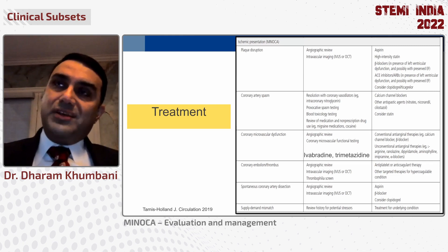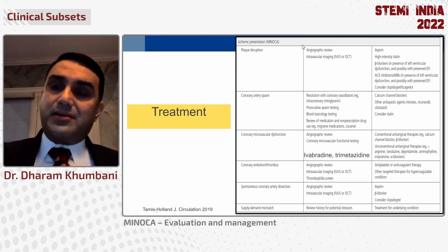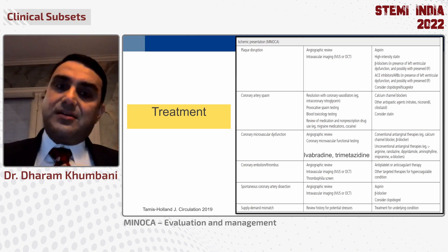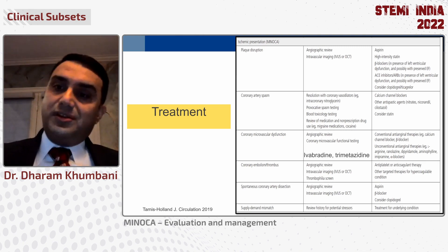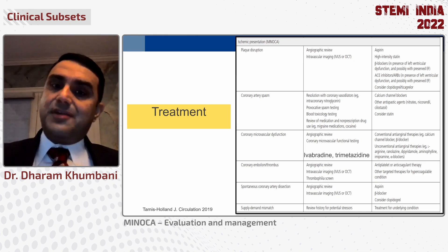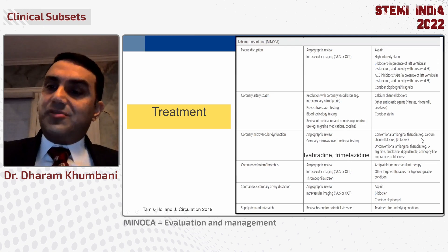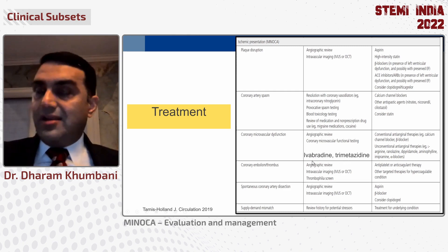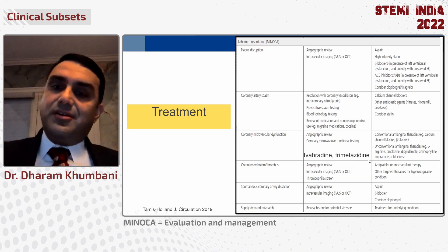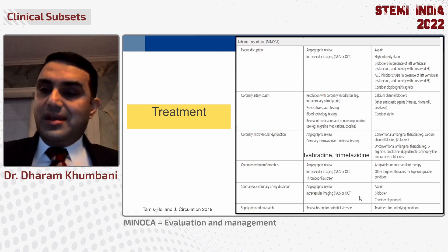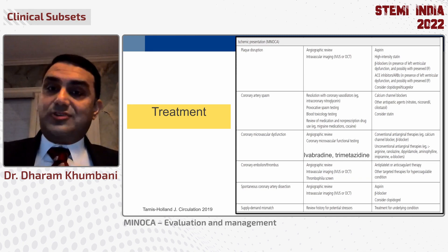Why is it important to phenotype the cause of MINOCA? Because it really drives your treatment decision. If you have typical plaque disruption, you treat it like any atherosclerotic problem — antiplatelets, statin, beta blockers. If you identify spasm, you avoid beta blockers and treat with calcium channel blockers and nitrates. Microvascular dysfunction can be treated with calcium channel blockers, beta blockers, ranolazine, ivabradine, and trimetazidine — though the latter is not available in the U.S. Once you identify the cause, you can treat it accordingly.